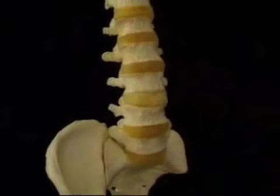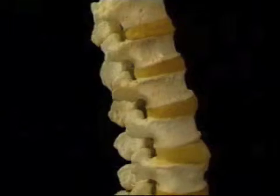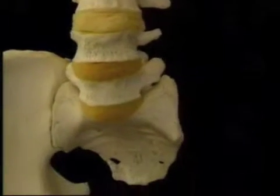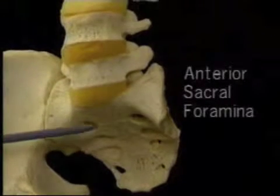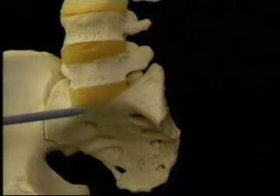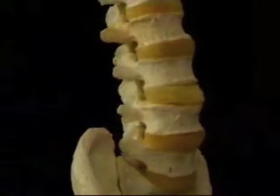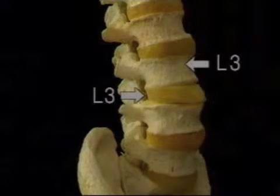To see where these arise, let's take a look at the lumbar spine and the sacrum. Below each vertebra there's an intervertebral foramen, and an anterior ramus emerges through each foramen. The anterior rami of the sacral nerves emerge from the anterior sacral foramina. Each anterior ramus is numbered according to the vertebra or the sacral segment that's above it. Here's the third lumbar vertebra; here's where the L3 ramus emerges.